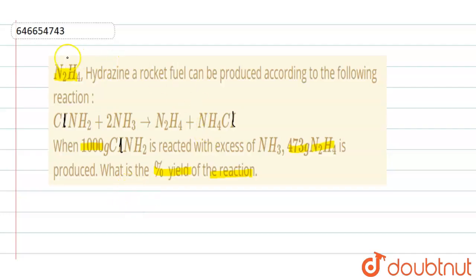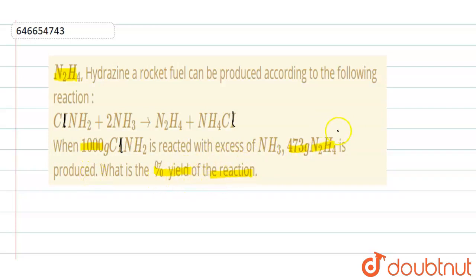Hello everyone. The question is: N2H4 hydrazine rocket fuel can be produced according to the following reaction. When 1000 grams of ClNH2 is reacted with excess of NH3, 473 grams of N2H4 is produced. What is the percentage yield of the reaction? We have to calculate the percentage yield of the reaction.